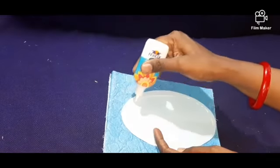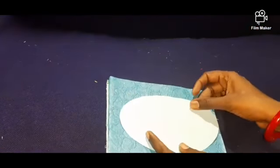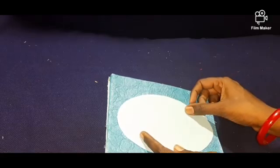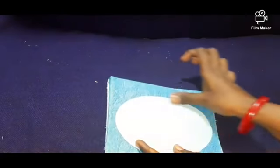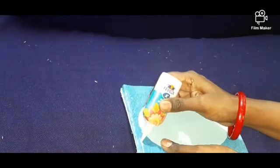You have to stick. You can paste it like this. Stick the oval shape. You can take the foam sheet and stick the border.